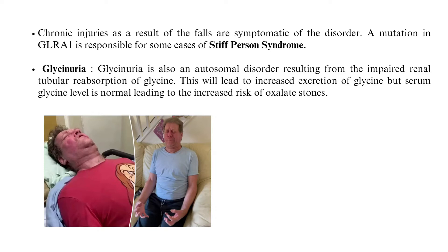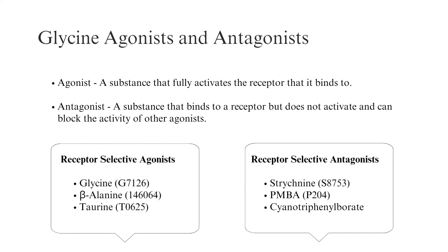Glycine Agonists and Antagonists: An agonist is a substance that fully activates the receptor it binds to, whereas an antagonist binds to a receptor but does not activate it and can block the activity of other agonists. Receptor-selective agonists include glycine, beta-alanine, and taurine. Receptor-selective antagonists include strychnine, PMBA, and cyanotriphenylborate.